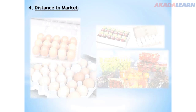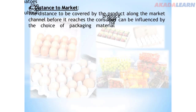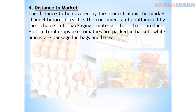Number four: distance to the market. Distance to the market can also influence the choice of packaging material. The type of packaging materials to be used depends on the distance to the market. Materials that are durable with good stacking strength are used for distant markets, while flexible plastics or polythene bags can be used for nearby markets. For example, horticultural crops like tomatoes are packed in baskets, while onions are packed in bags or baskets.